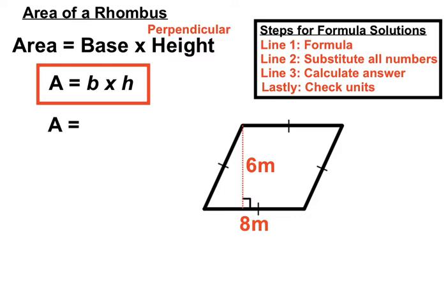The area will be, well the base you can see is 8 so we'll put an 8 underneath the B. And our perpendicular height is 6m. So we'll put a 6 underneath our H. And we have area equals 8 times 6. 8 times 6 is 48.